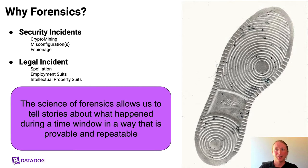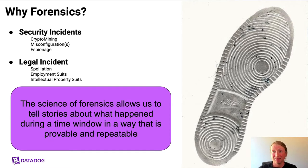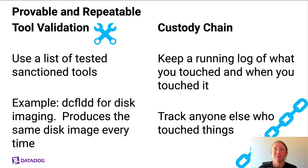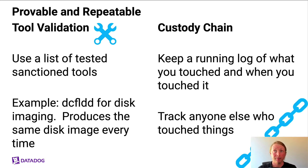Regardless of the reason, I tend to think of forensics as telling stories that occurred in a specific time window using facts that can be derived provably and repeatedly. So let's talk about what it means for a process to be provable and also repeatable. We used to talk about this as using validated tooling and also keeping track of the chain of custody for pieces of evidence.